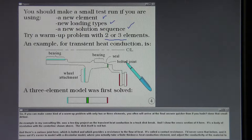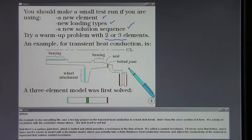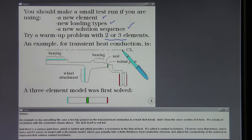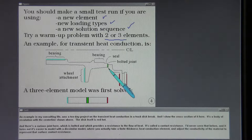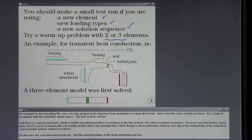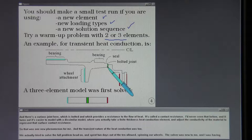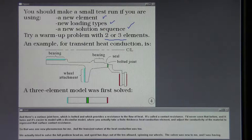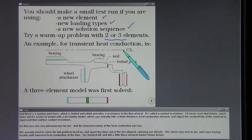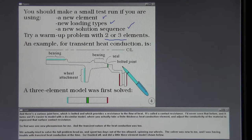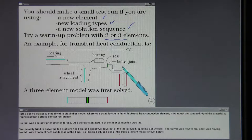An example in my consulting life was a 10-day project on the transient heat conduction in a truck disc brake, and I show the cross-section of it here. It's a body of revolution with a center line shown above. The disc itself is red-hot, and there's a curious joint here which is bolted and which provides a resistance to the flow of heat. It's called a contact resistance. I'd never seen that before, and it turns out it's easier to model with a dissimilar model where you actually take a finite thickness heat conduction element and adjust the connectivity of the material to represent that surface contact resistance. That was one new phenomenon for me, and the transient nature of the heat conduction was too. We actually tried to solve the full problem head-on, and spent two days out of the ten allowed spinning our wheels. The solver was new to me, and I was having trouble with transient heat conduction at the time.